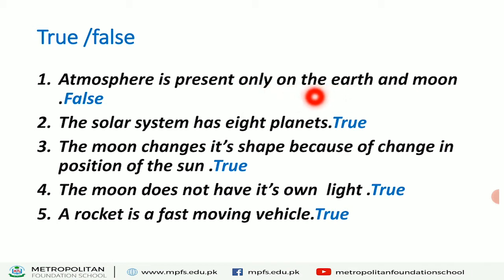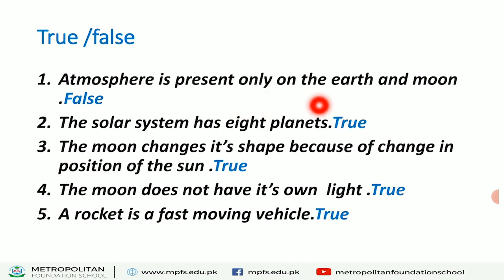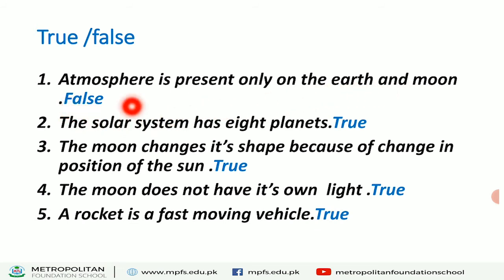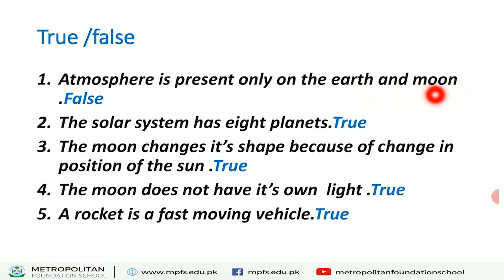First of all, write down the True-False. Make a heading 'True-False' in blue color — write the heading in blue. Then start your work. First statement: 'Atmosphere is present only on the Earth and Moon.' This statement is false.